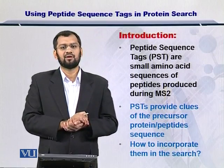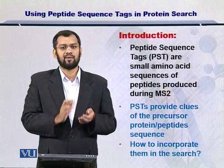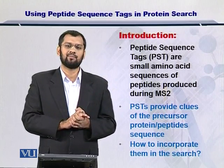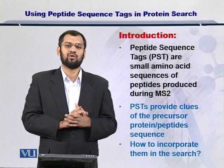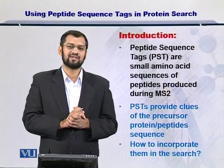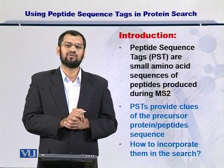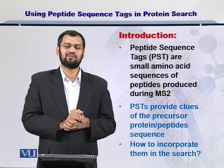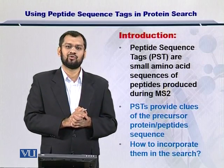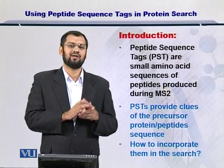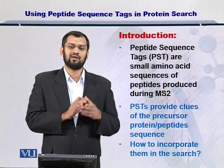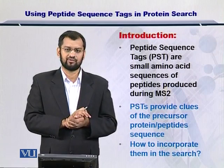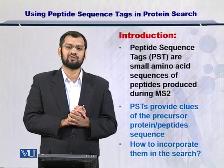All of the clues are peptide sequence tags, but the protein in question may not be reporting all of them. Why? Because there is a chance that some peptide sequence tag is formed just by chance. Moreover, there are a few amino acids that have equal mass, so you cannot be sure which amino acid it is. So let's see how we incorporate this into the peptide sequence tag search.